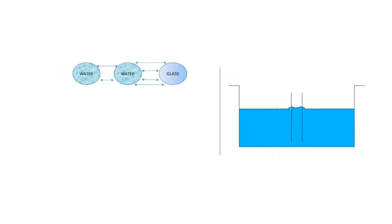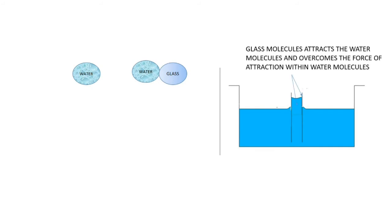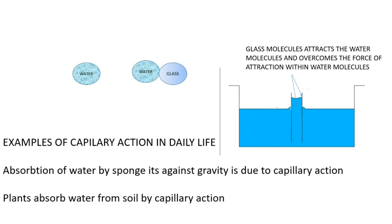If a water molecule and a glass molecule are placed together, the water molecule is attracted toward the glass molecule, overcoming the cohesive force within water. As a result, the water level inside the tube rises relative to the container. Daily life examples: absorption of water by a sponge against gravity is due to capillary action. Plants absorb water from soil by capillary action — this is also how water reaches the top of a tall coconut tree, traveling against gravity.